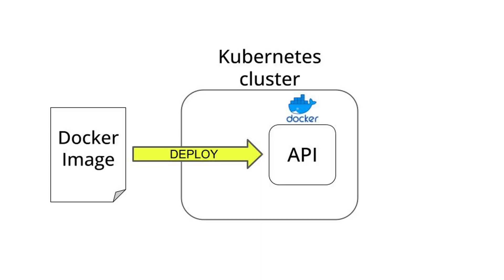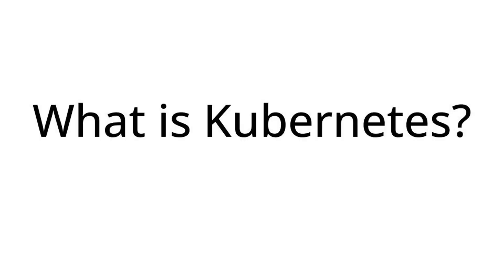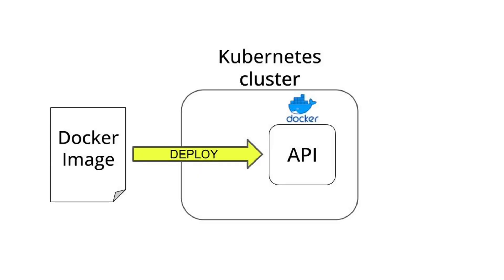So today I want to show you how to deploy this API to a production Kubernetes cluster. What is Kubernetes? Kubernetes is an open source container orchestration platform that helps you deploy, scale, and in general manage your dockerized applications. It has become the de facto standard due to large community support and backing from major tech companies.